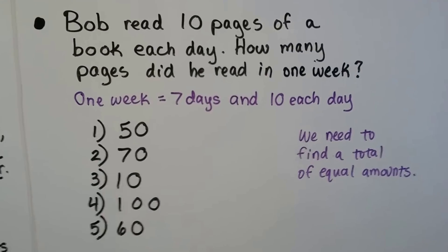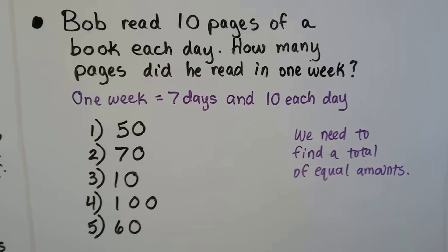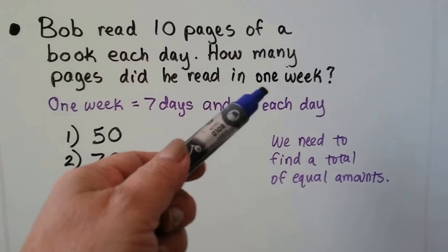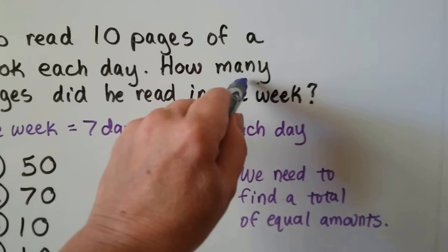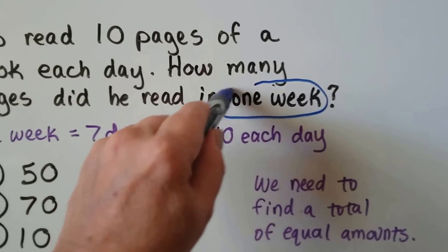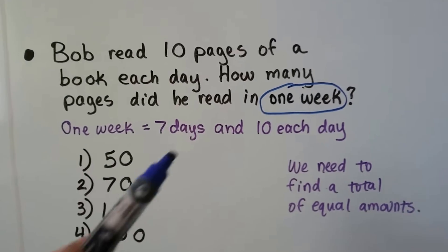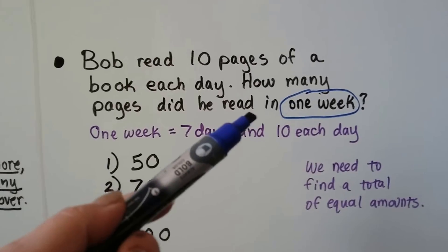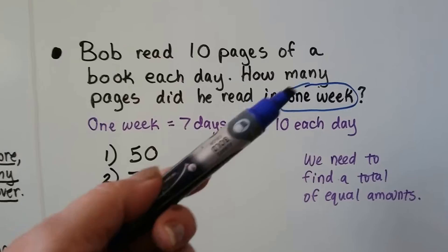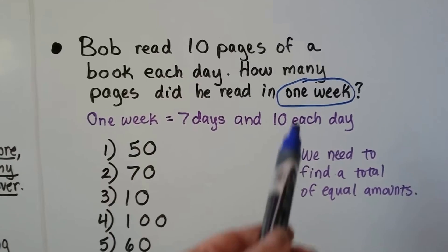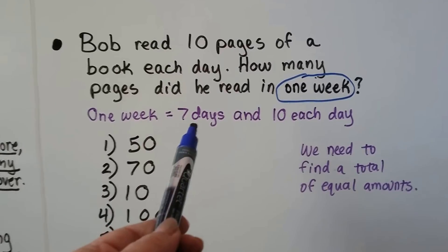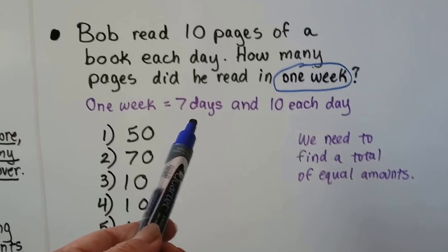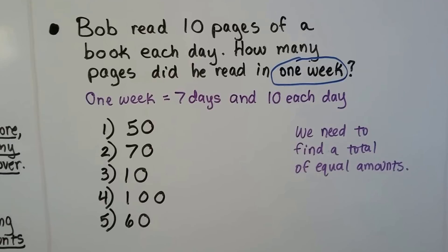Let's look at this one. Bob read ten pages of a book each day. How many pages did he read in one week? Again, this 'one week' is information we need. One week is seven days. If you read ten pages for a week—for seven days—we need to find a total of equal amounts.